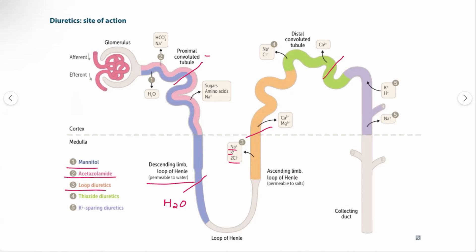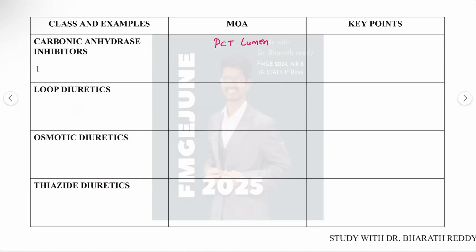At the distal convoluted tubule, sodium and chloride channels are inhibited by thiazide diuretics. Potassium-sparing diuretics act here too — we are not blocking potassium but actually retaining it. This is how each diuretic class corresponds to a specific site along the nephron.